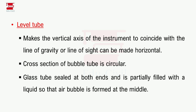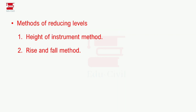If the vertical axis of the instrument coincides with the line of gravity, these two points define the level tube. Mainly, the line of sight can be made horizontal — this is the point of reducing level.